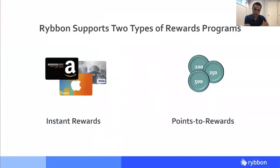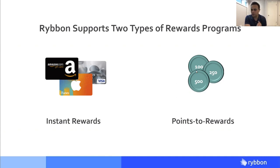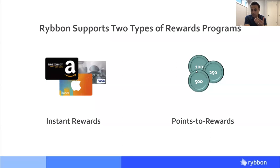At Ribbon we support two different styles of reward programs. The first is instant rewards — you offer a reward instantly upon completion of a survey, such as a $10 reward card upon completion. That is a very popular way of using Ribbon. We also provide a points-based reward system, which works like a loyalty or frequent respondent system for research. A points-based system is valuable for panels, insights communities, and longitudinal or multi-part studies where retention of the same participants is very important — people accumulate points and redeem them for rewards down the road.